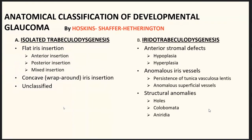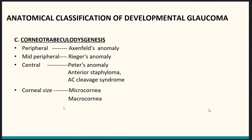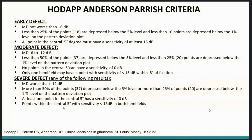The anatomical classification of developmental glaucoma by Hoskins-Shaffer-Hetherington is classified into three classes: isolated trabecular dysgenesis, iris trabecular dysgenesis, and corneal trabecular dysgenesis. Isolated trabecular dysgenesis includes flat iris insertion and concave iris insertion. Iris trabecular dysgenesis includes anterior stromal defects, anomalous iris vessels, and structural anomalies. Corneal trabecular dysgenesis: if adhesions are present peripherally it is called Axenfeld anomaly; at mid-periphery it is Rieger anomaly; centrally it is Peters anomaly.